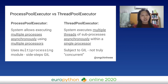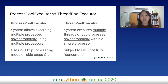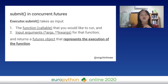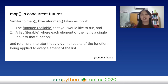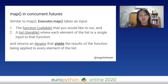For the ProcessPoolExecutor, it uses the multi-processing module and sidesteps the GIL. But for the ThreadPoolExecutor, because it is still subject to the GIL, it is not truly concurrent — even though concurrent.futures has the word 'concurrent.' The submit function takes the function and input arguments and returns a future object representing the execution of the function. executor.map is similar to Python's built-in map, returning an iterator that yields the result of the function applied to every element of the list.